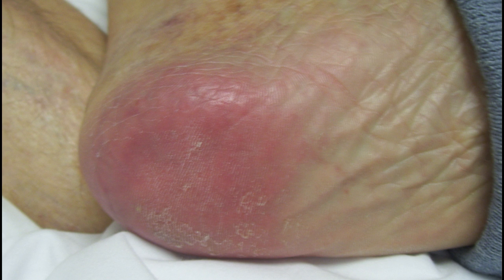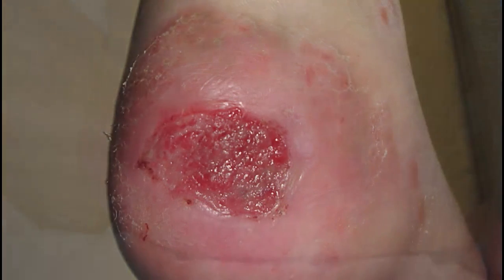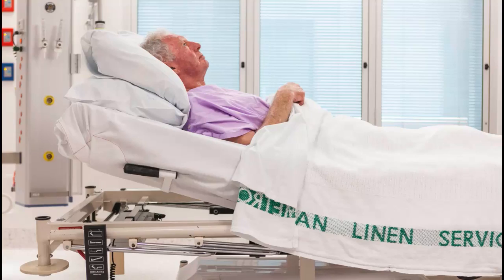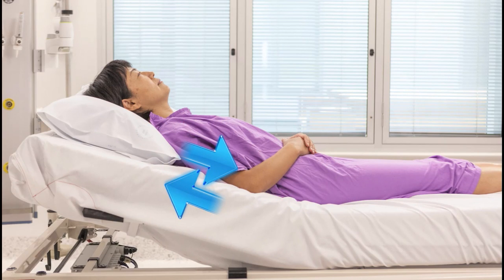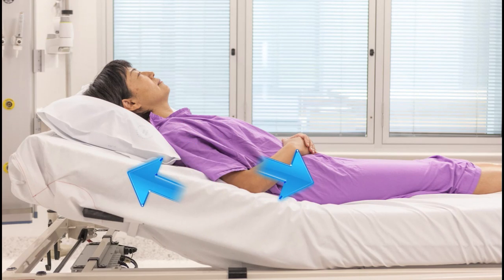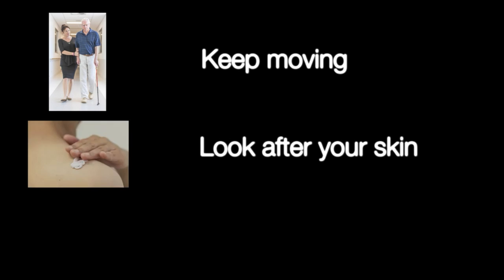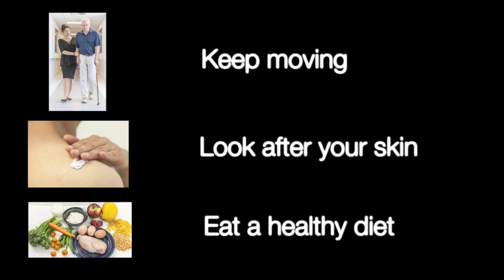In summary, pressure injuries are also known as bed sores and are wounds to your skin and underlying tissue. They are caused by unrelieved pressure, like when you lie in one position for a long period of time, or from shearing, such as when you slip down in bed. There are three simple things you can do to help decrease your risk: keep moving, look after your skin, and eat a healthy diet. Actively participating in your own care by undertaking these three simple activities will decrease your chances of getting a pressure injury.